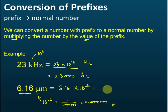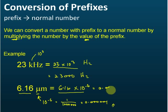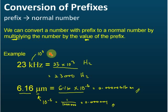Therefore, the answer can be given in standard form or scientific notation, or you can write it as 0.00000616 meters. That is how we convert a number with a prefix to a normal number — we multiply the number by the value of the prefix.